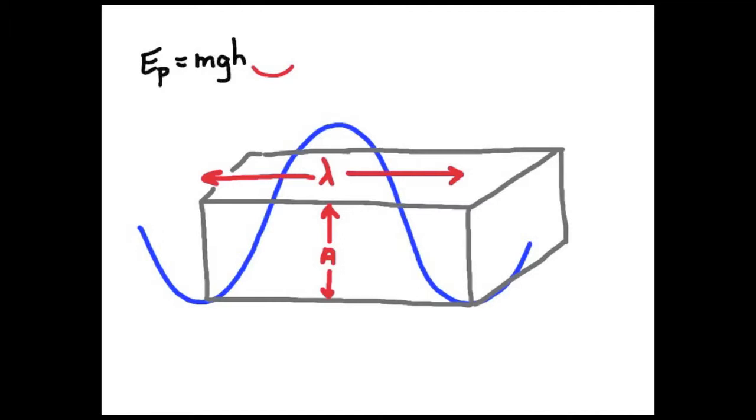So, to work out the power in a wave, we've got to figure out, first of all, the volume of that water that's moving. Now that sinusoidal function shown in blue, the waveform, calculating its volume is a little tricky without using calculus, but we can simplify that.